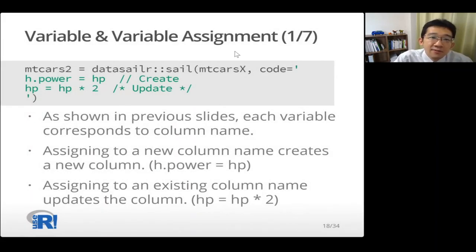First, variable and variable assignment. As shown in previous slides, each variable corresponds to column name. So hp variable, for example, corresponds to hp column. Assigning to a new column name - so variable name corresponds to column name. I will use variable and column name interchangeably. Assigning to h.power, which does not originally exist on mtcarsX dataset, creates a new column.